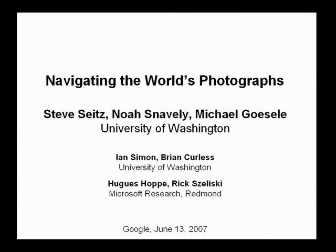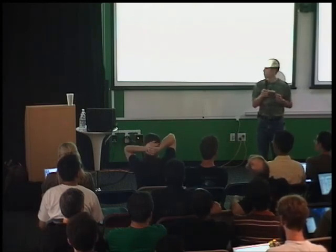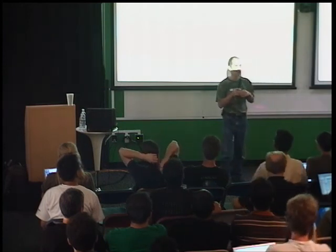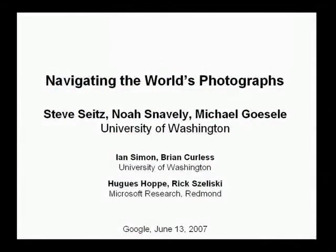Steve got his PhD in Wisconsin, spent some time at CMU, and has been at University of Washington for about seven years. He's a pretty famous researcher in computer vision and graphics, known among other things for his work known as phototourism, which he's going to talk about today. He's here with two associates: grad student Noah Snaverly and postdoc Michael Gusele. The talk is going to be public, so refrain from asking anything that is Google confidential.